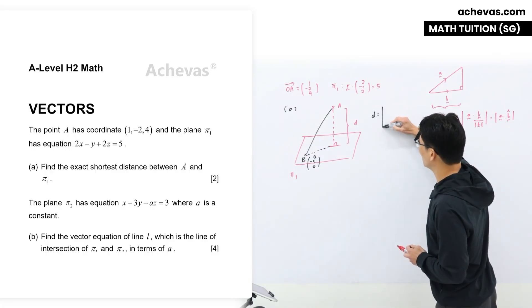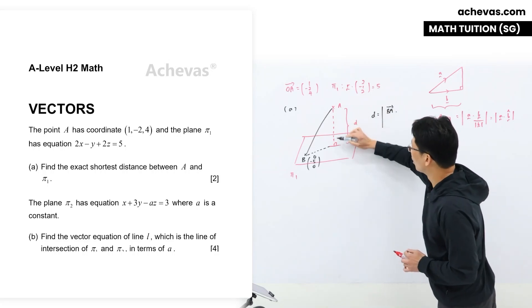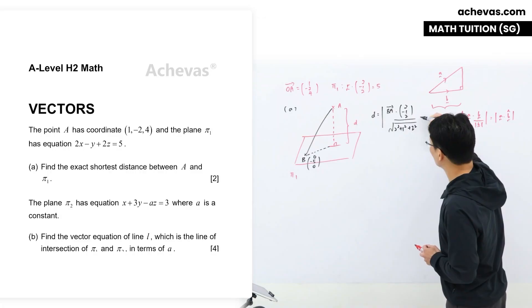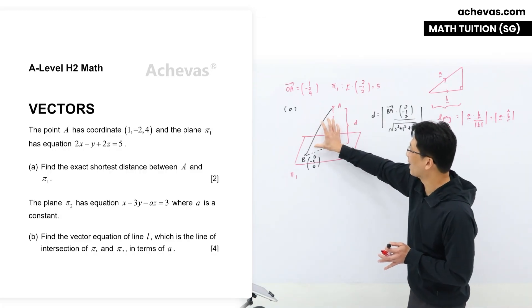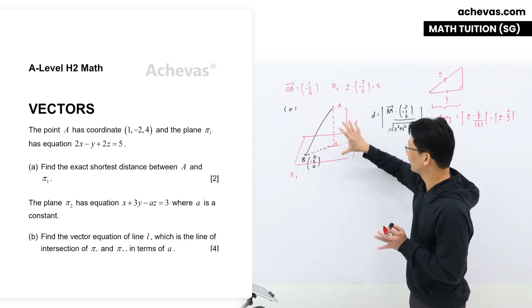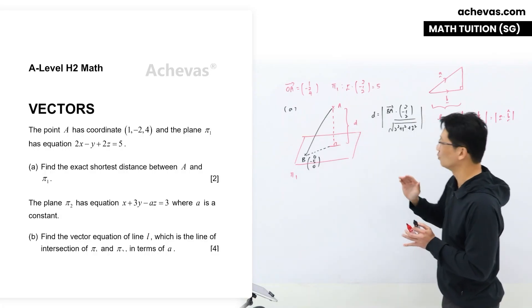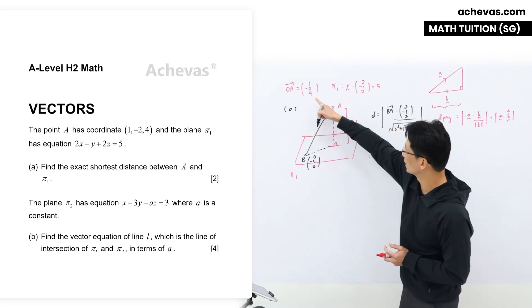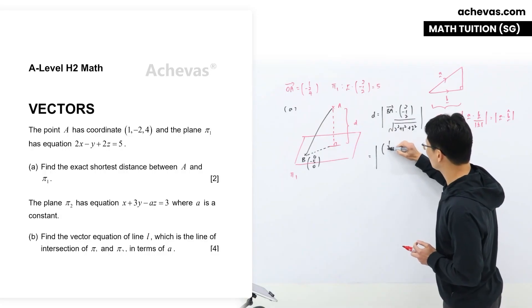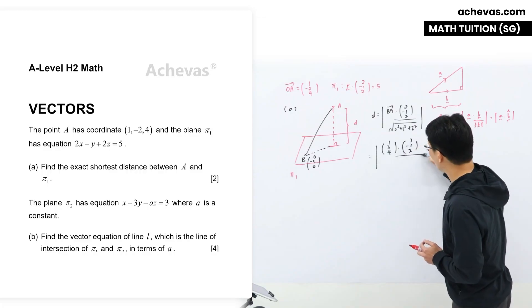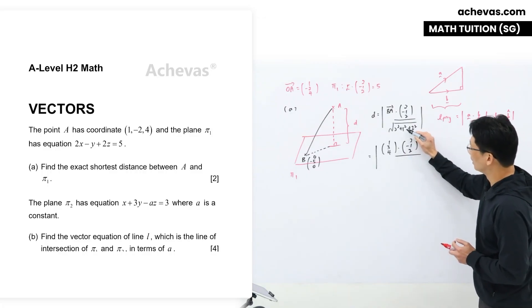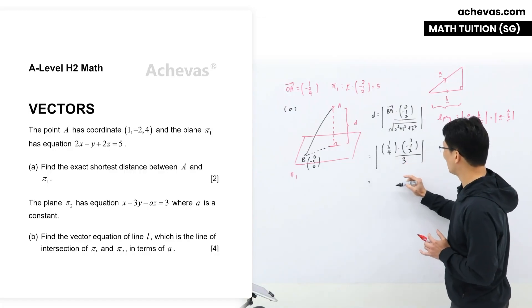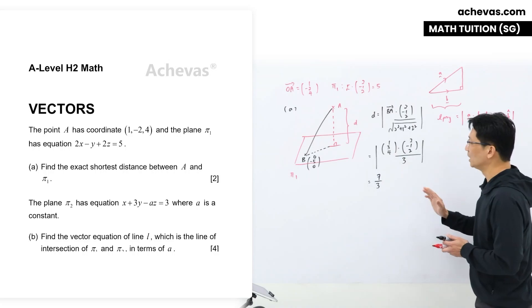The shortest distance D equals BA dotted with the normal (2, -1, 2) over √(2² + 1² + 2²). I'm projecting BA onto the normal vector to get the shortest distance from A to π₁. BA = OA - OB = (1, 3, 4). So D = (1, 3, 4) · (2, -1, 2) over √9 = (2 - 3 + 8) / 3 = 7/3. This is the answer for part A.